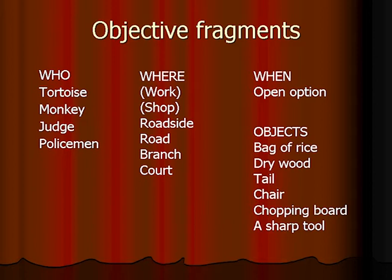So now we have the fragments. Who? We have the tortoise, the monkey, the judge, and the policeman. Where? I have in brackets put 'work and shop' — that might be something to keep in mind, that she is working hard to get her money and go to the shop and buy rice. Otherwise we have the roadside, the road, the branch, and the court.